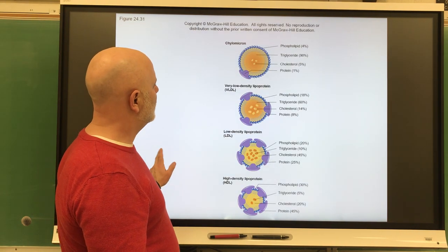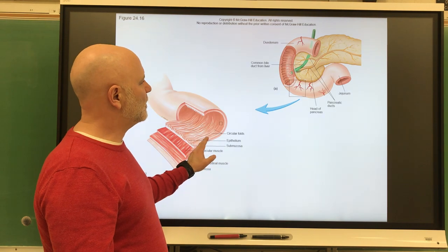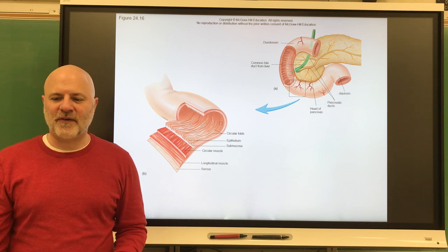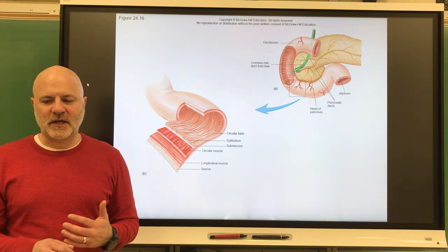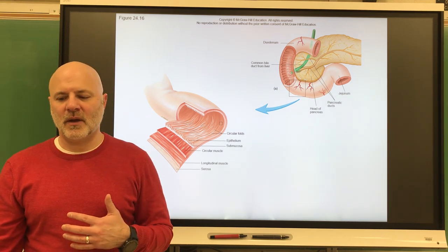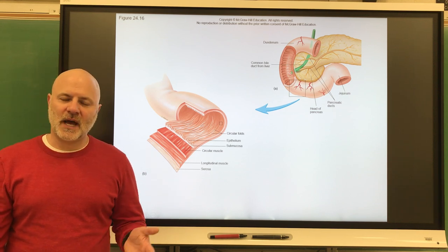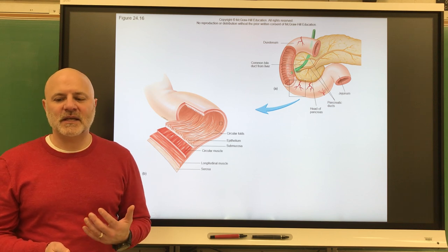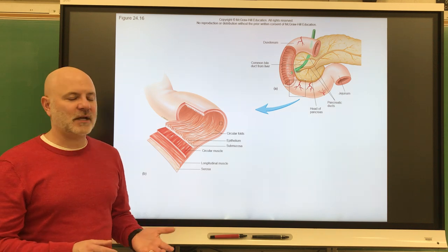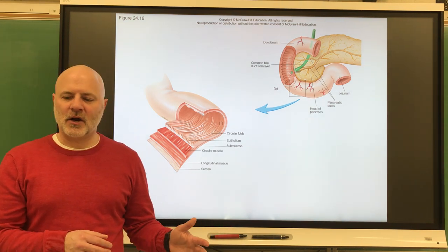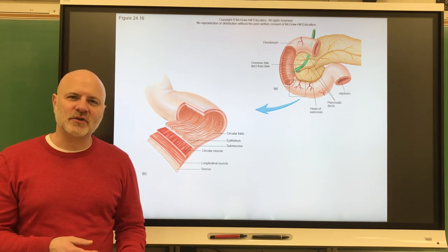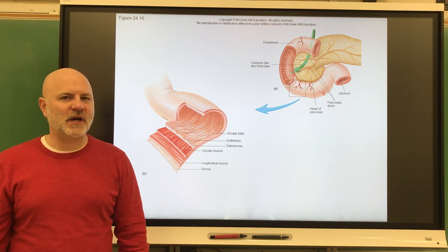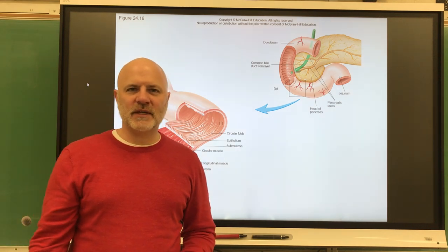Movements in the small intestine: segmentation mixes and moves chyme through, taking three to five hours to pass through. Peristalsis occurs once most nutrients are absorbed, pushing chyme, bacteria, and mucosal cells — now called feces — into the large intestine. If the small intestine is irritated, a peristaltic rush occurs, rapidly moving contents into the large intestine, resulting in diarrhea — frequent defecation and watery stool.